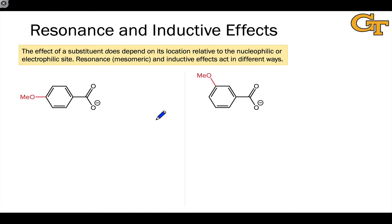One other thing we should remind ourselves of is that a substituent can withdraw or donate electron density in at least two ways. There's a third way we won't get into, but the two most important by far are resonance effects and inductive effects. In some of the older literature, you'll also hear resonance effects referred to as mesomeric.